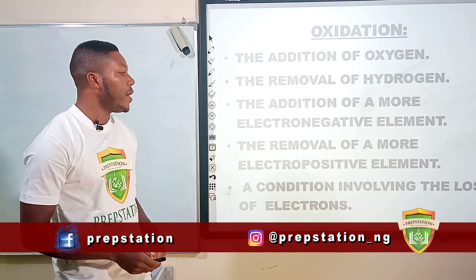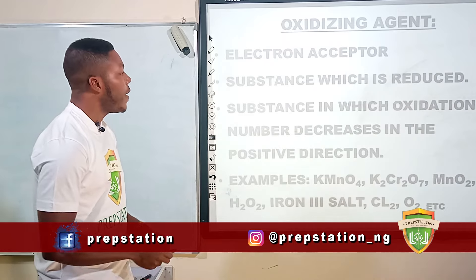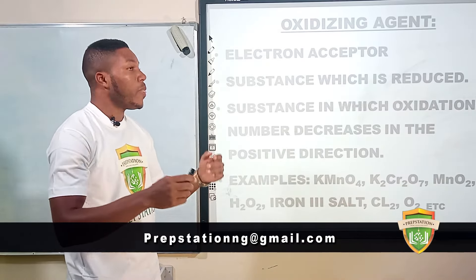Oxidizing agents can be defined in various ways: they are electron acceptors, substances which are reduced during a redox reaction, and substances in which oxidation number decreases in the positive direction. Examples of oxidizing agents include potassium tetraoxomanganate(VII), potassium heptaoxodichromate(VI), manganese(IV) oxide, hydrogen peroxide, iron(II) salts such as iron(II) chloride, chlorine gas, and oxygen gas.